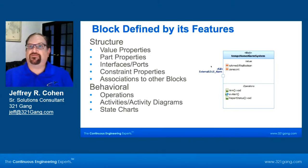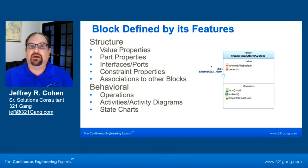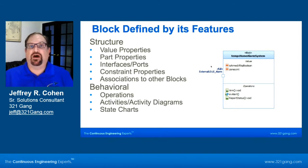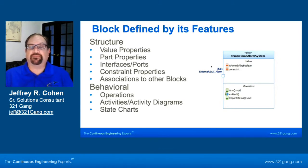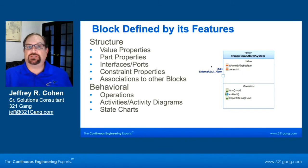The block itself is defined by its features. A block is a structural element, and those features can be either structural, or they can be interfaces, or they can be behavioral. Structurally, we would have things like value types. We would have other parts that they contain, and interfaces to other parts of the system. Constraints and associations are also structural elements. When we talk about behavior, we're talking about what the block is going to do — its operations, its activities and actions, activity diagrams, and its state charts.